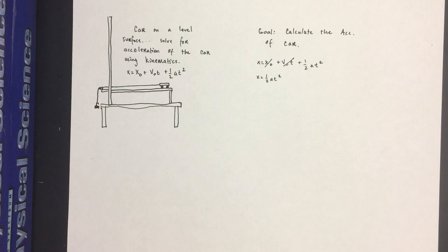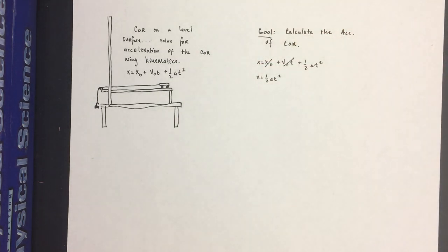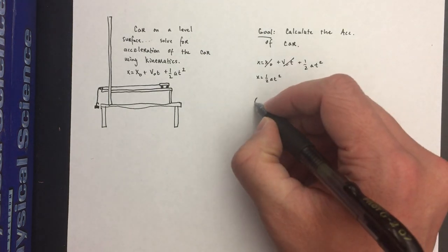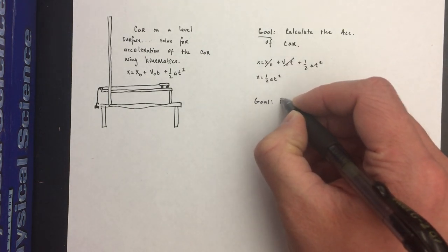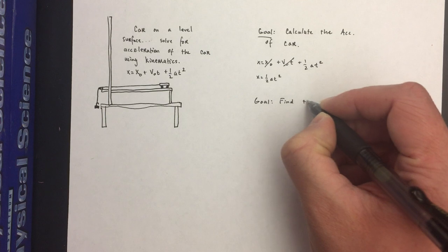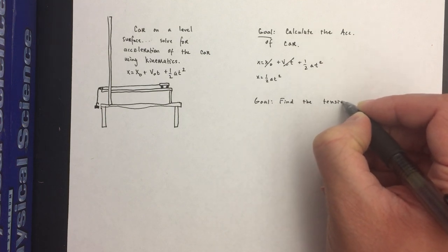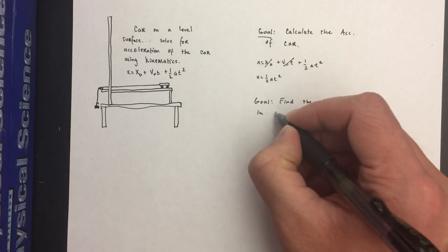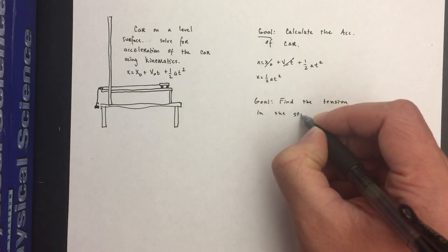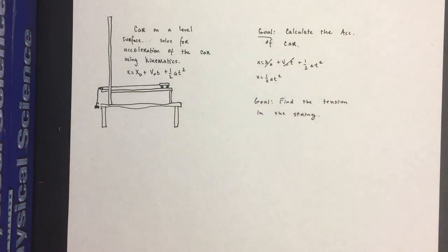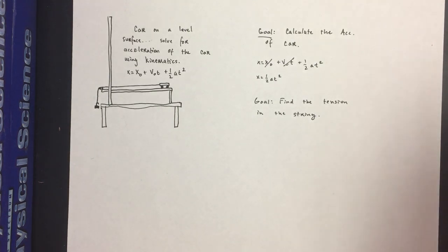Depending on your frame of reference, if you had the car moving to the right it would be a positive acceleration, or moving to the left it would be a negative acceleration — that was really just a matter of your frame of reference. After you did that, you were then tasked with finding the tension in the string.